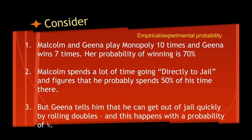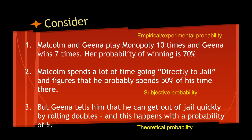In the first case, Malcolm and Gina playing Monopoly ten times and Gina winning seven times — that is an empirical probability. This is something that was figured out by observation, in this case by experimentation. The second example, Malcolm going directly to jail and figuring that he spends half of his time in jail, that is called subjective probability — it's part of his own impression of what's going on. Gina telling him that he can get out of jail by rolling doubles is a theoretical probability, because she figured out how often you would get out if you rolled doubles, and the probability is indeed one in six.